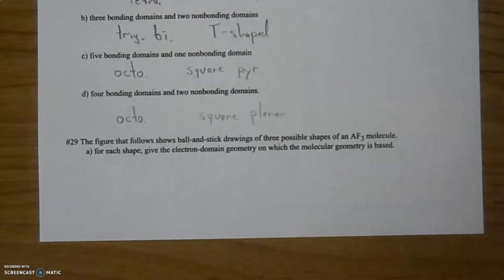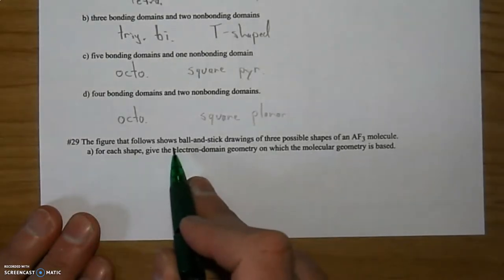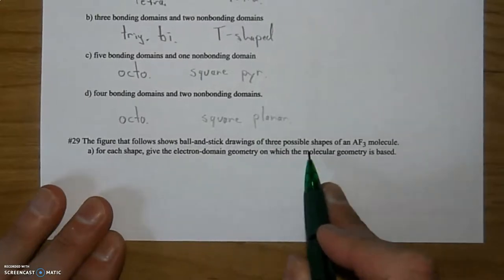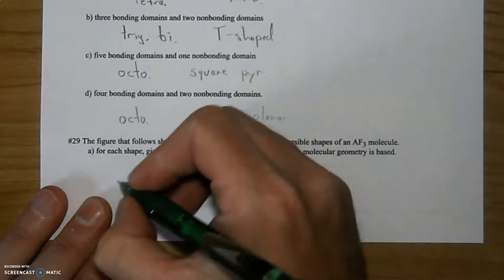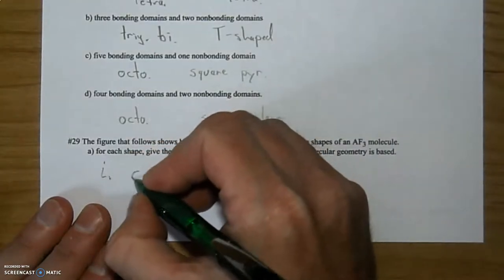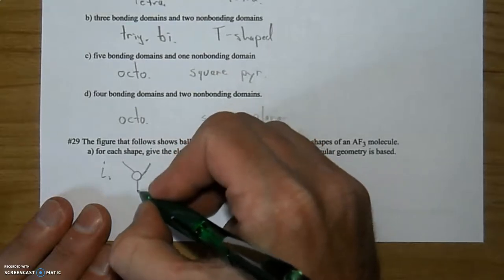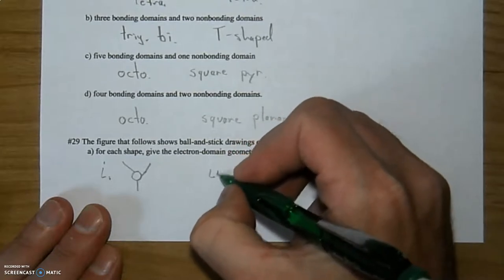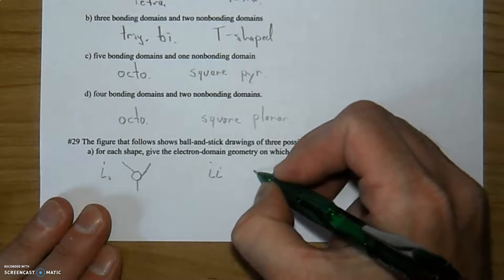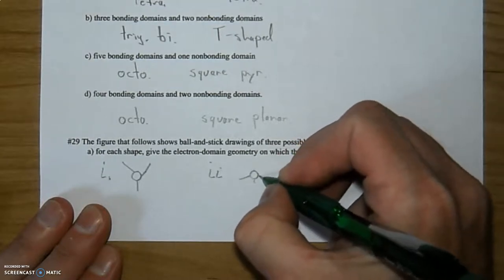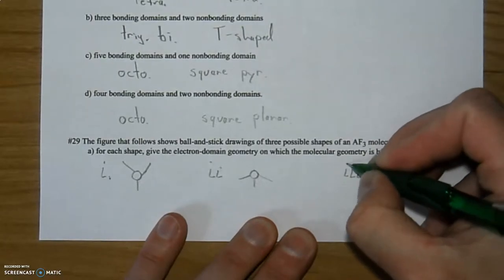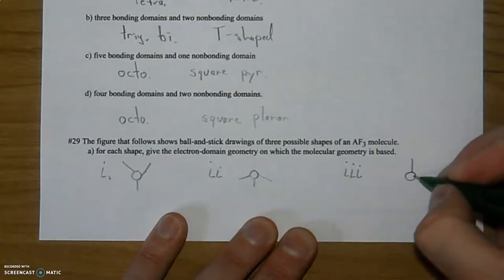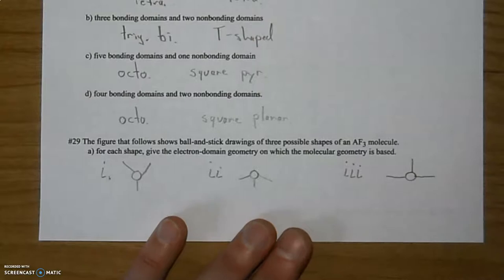All right, 29. The figure that follows shows ball and stick drawings of three possible shapes of an AF3 molecule. Here's our three shapes. Shape one, on the ends of each of these sticks is another atom. That's one, there's two, work with my drawing here a little bit, that's a short one going in the back, and there's another. So this is what you see in three.